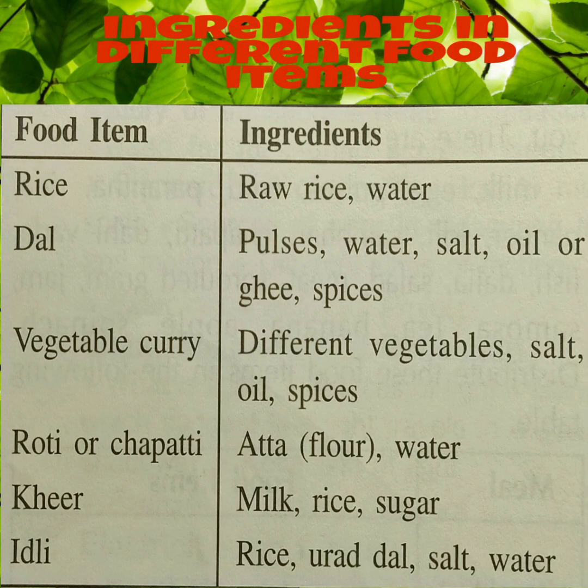These materials used to prepare a food item are called ingredients. Another example: for cooking rice, two ingredients are needed — raw rice and water. In vegetable curry, your mother uses different vegetables, salt, oil, and spices. For idli, many ingredients are needed: rice, urad dal, salt, and water. All these materials used for preparing a food item are known as ingredients of that food.